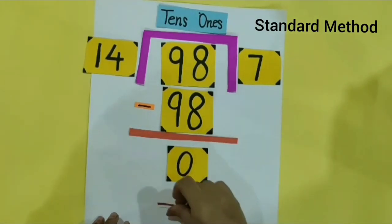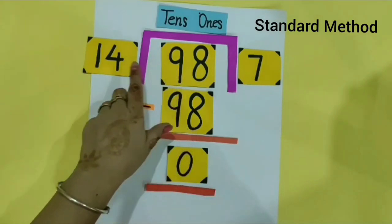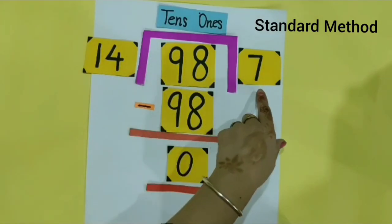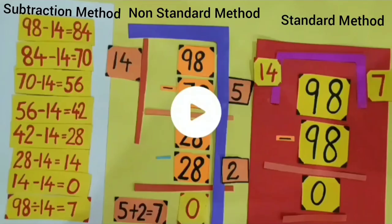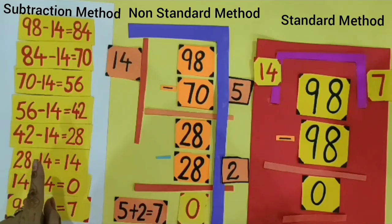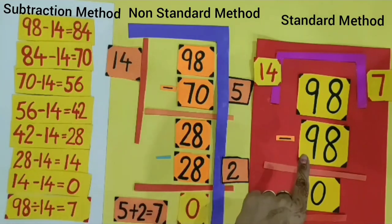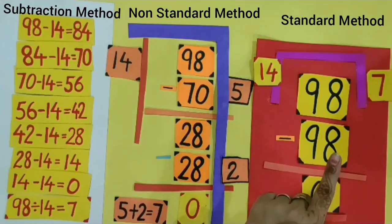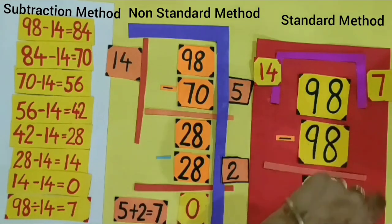Students, you saw that when we divide 98 by 14, we get 7 as the answer. We divided 98 by 14 using repeated subtraction method, non-standard method, and standard method of division, and each time we get 7 as the answer.